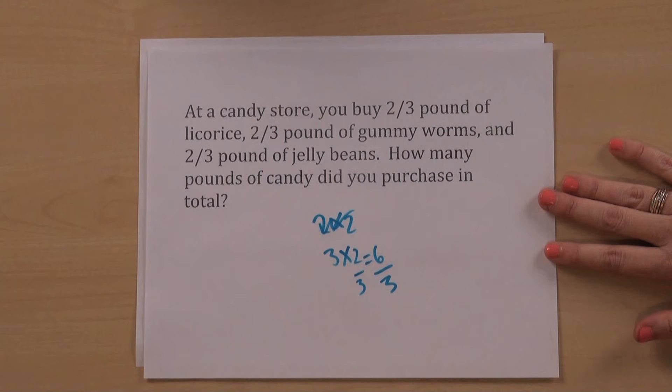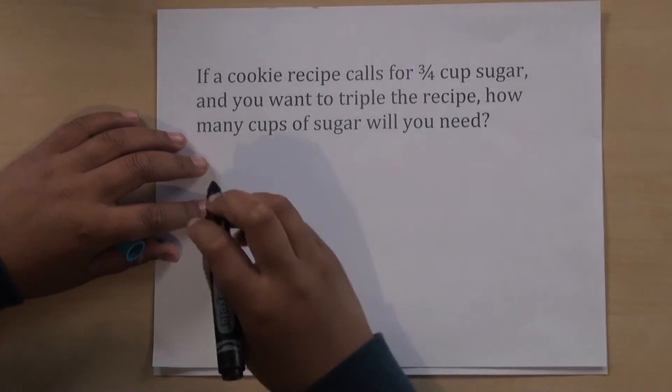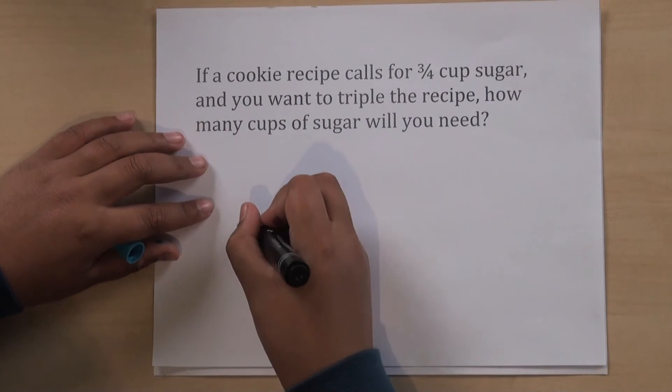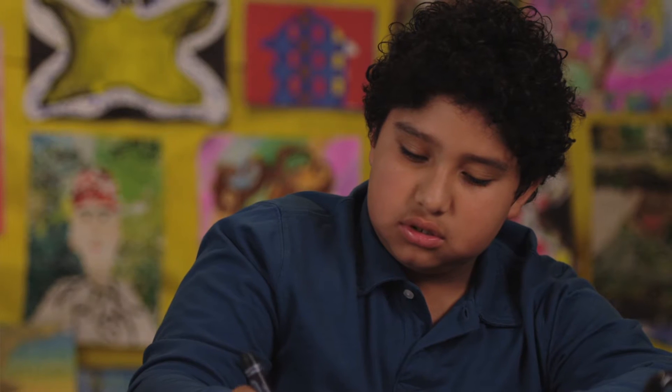Fourth graders should also be able to rewrite their answer in a way that makes sense with the problem. Here, cups of sugar are usually counted in whole numbers, so the answer is best in that form. This equals 9 fourths, which is equivalent to 2 and 1 fourths.